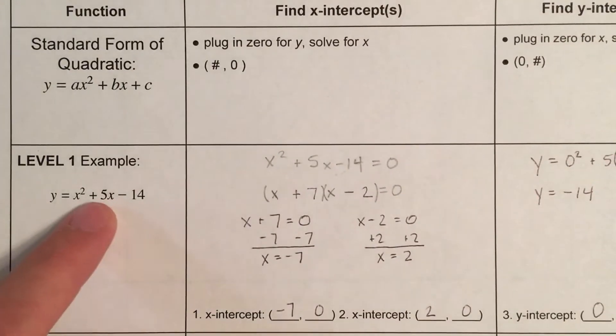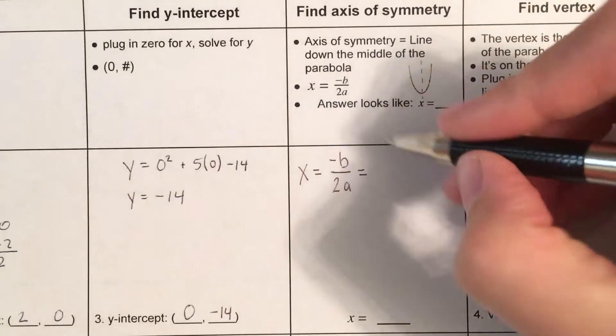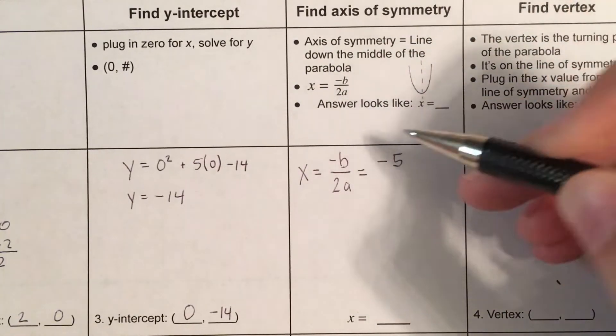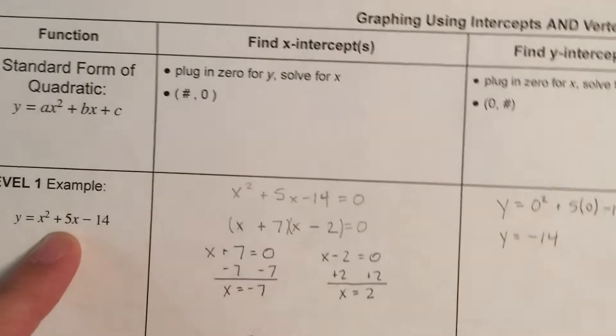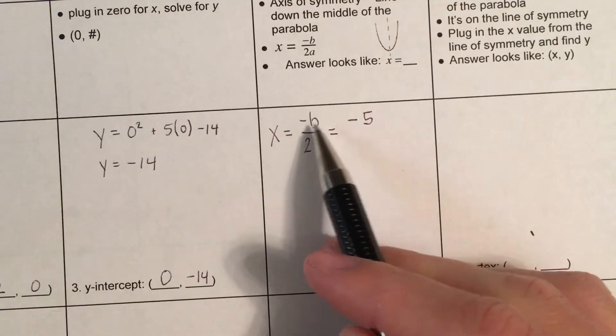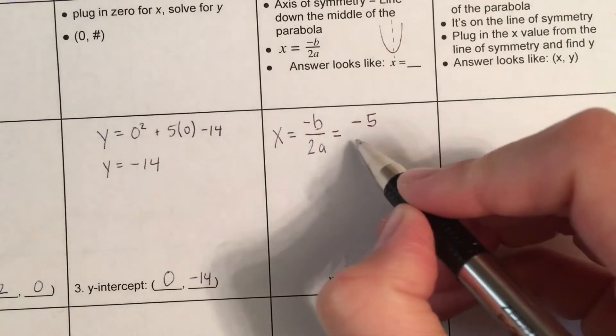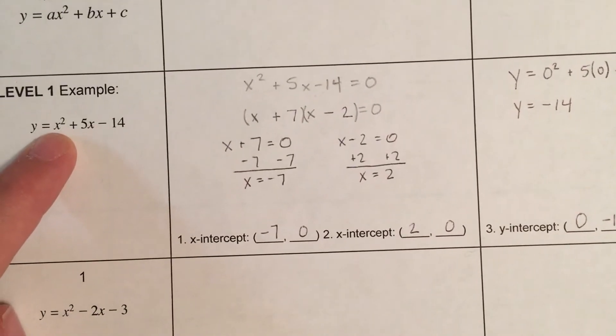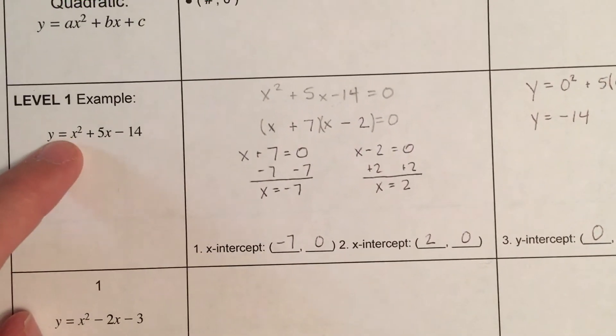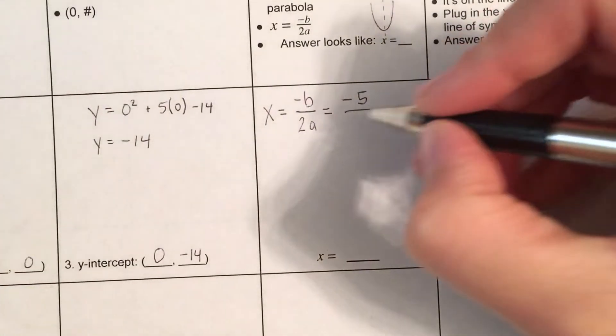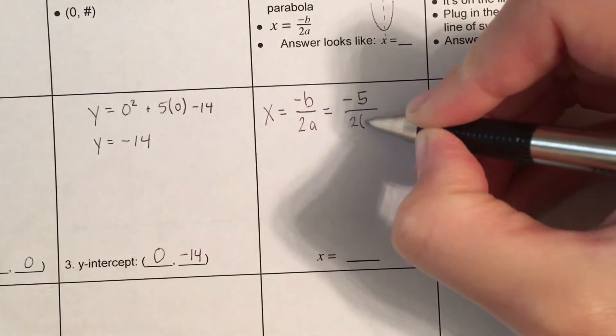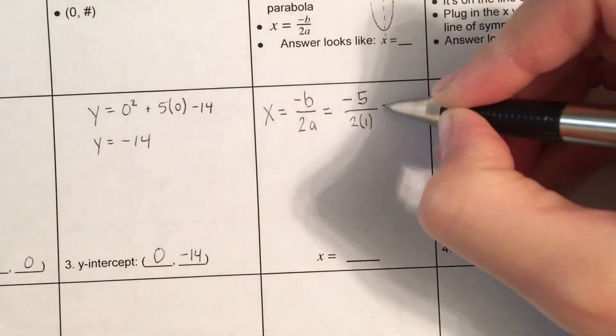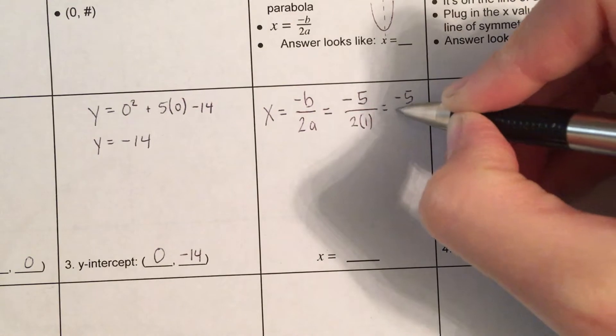So, in this case, b is 5. So, negative b is negative 5. Now, if b is a negative number, like let's say b was negative 3, then negative b would be positive 3. This is the opposite of b. It just changes the sign of whatever the b is. So, in this case, b is 5. And the a value in this function is 1. There's a 1 here in front of this x squared. And so, that's 2 times 1. So, this becomes negative 5. 2 times 1 is 2.